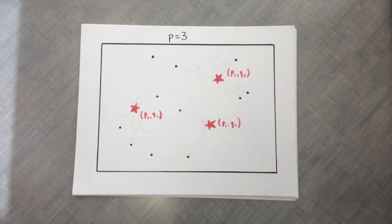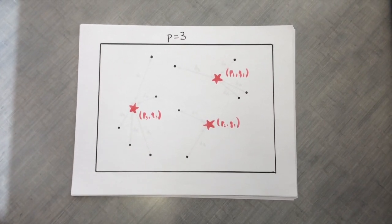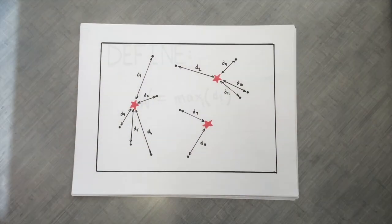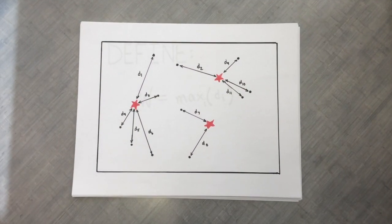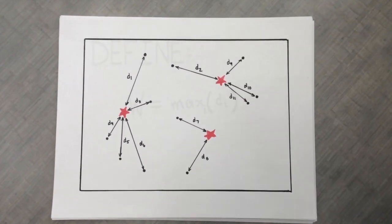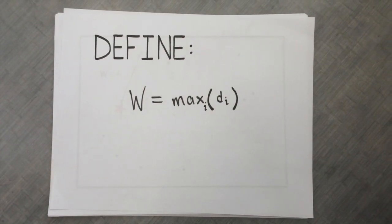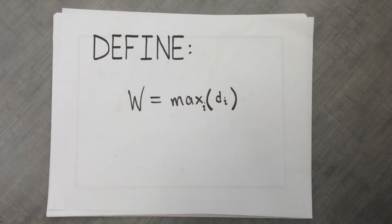Each center is denoted by (pi, qi) on the plane. For each point (x, y), let di be the distance from the point to the nearest center. Define the variable W equals the maximum of all the distances from a point to its nearest center.